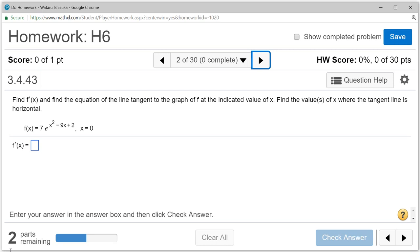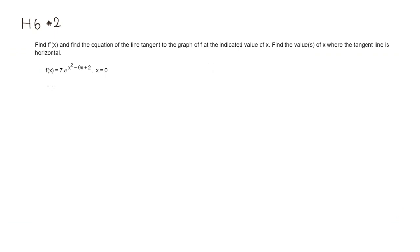Before that, we have to find the derivative. If you take the derivative, f prime of x is equal to — seven is a constant multiple, so just put it there. Whenever you take the derivative of e to the something, you copy exactly the same thing first. Then by the chain rule, we multiply by the derivative of the power. The derivative of x squared is 2x, derivative of negative 9x is negative 9, and derivative of 2 is 0.